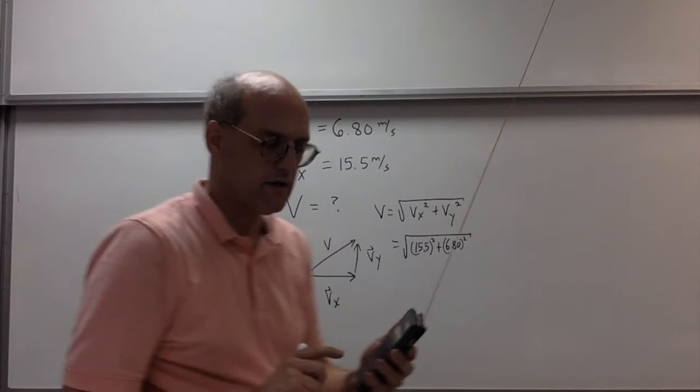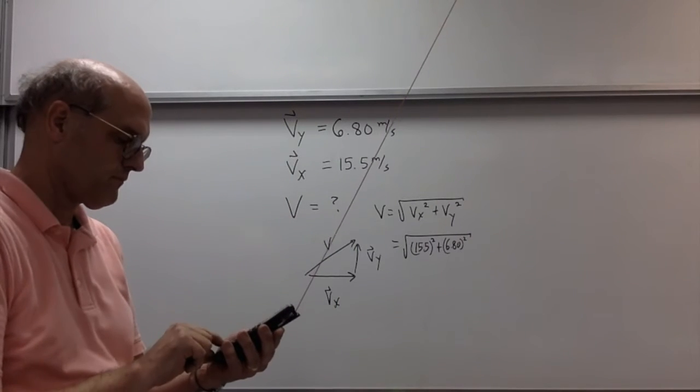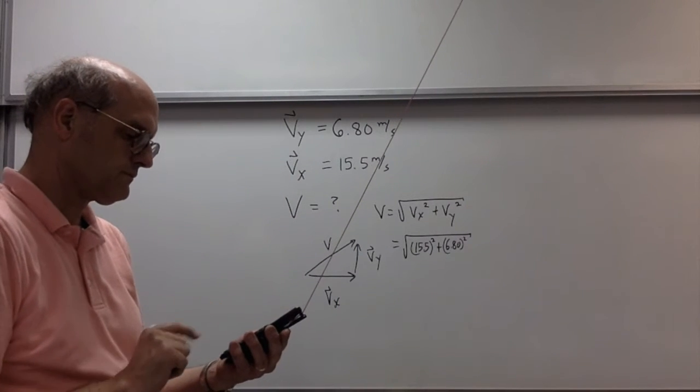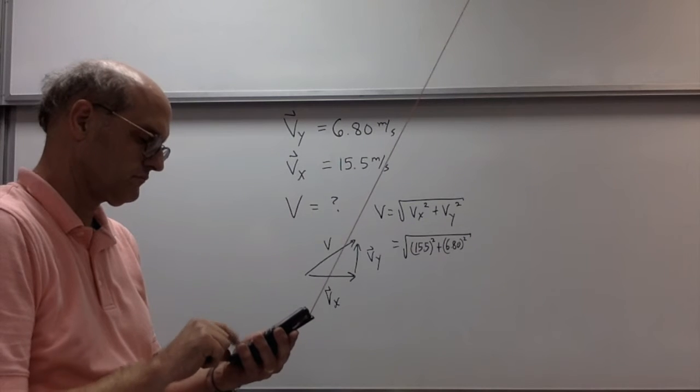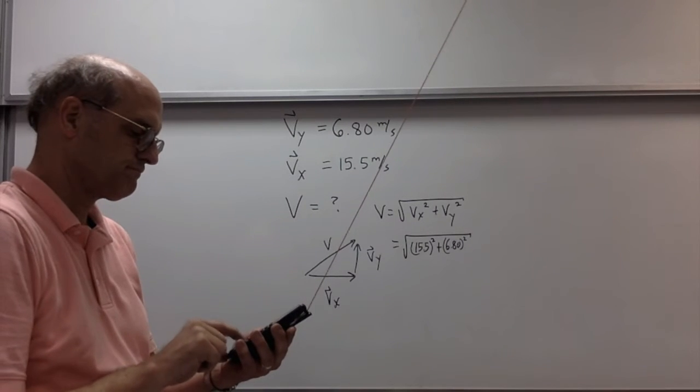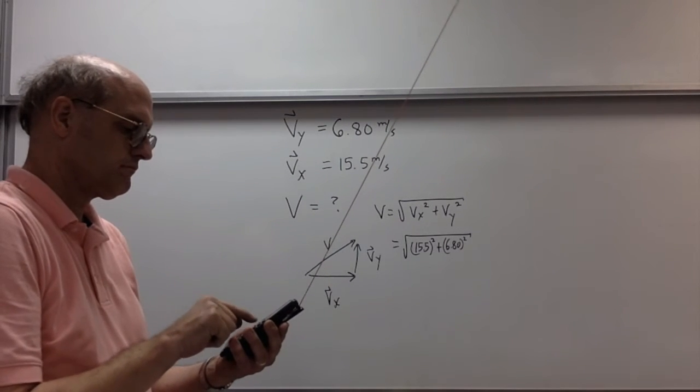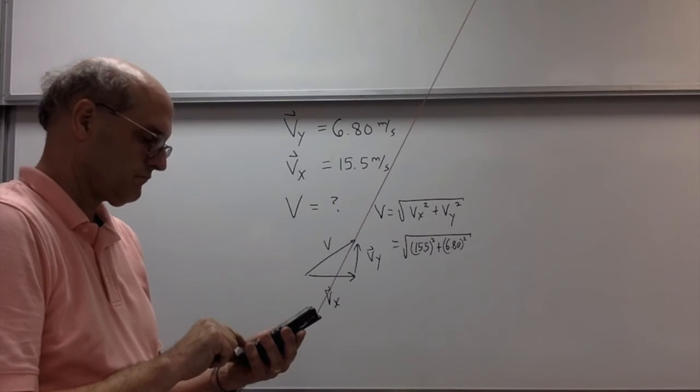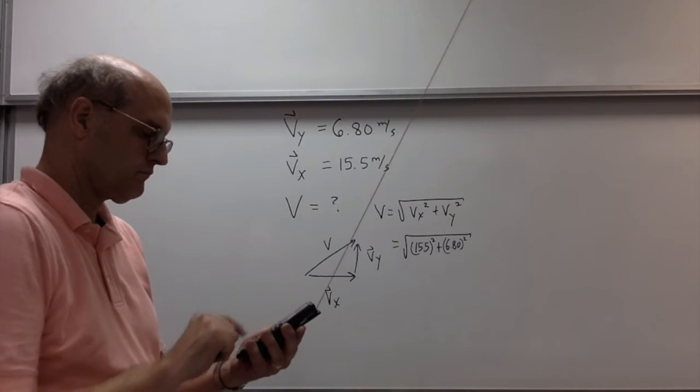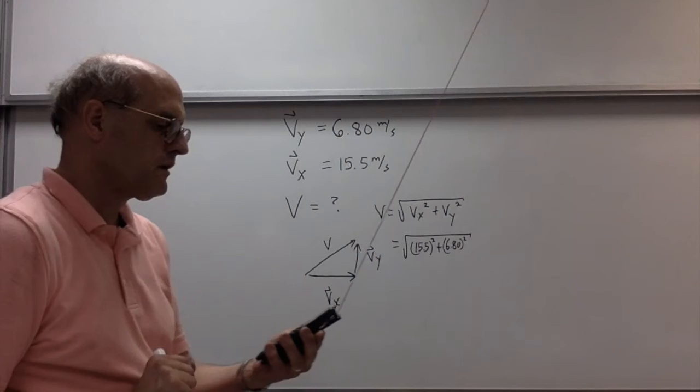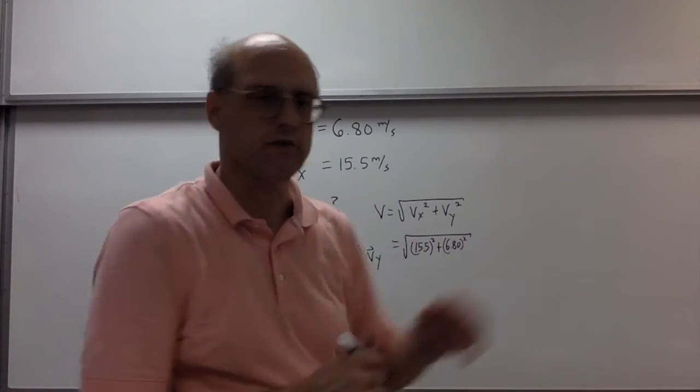The magnitude of the velocity of the glider is about 17 meters per second.